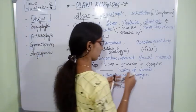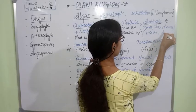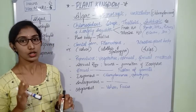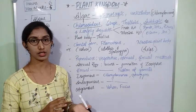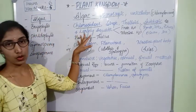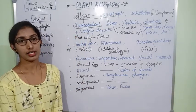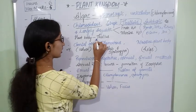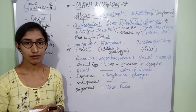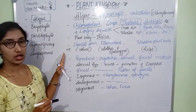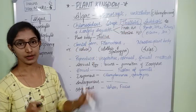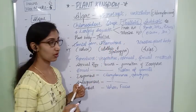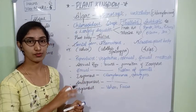Algae can also be found in ocean and seas. So we can conclude that algae are found both in aquatic freshwater as well as in the marine aquatic medium. The plant body of the algae is thaloid in nature — the body is called a thallus and it is completely flat. Algae may be unicellular but some are found in colonial forms.